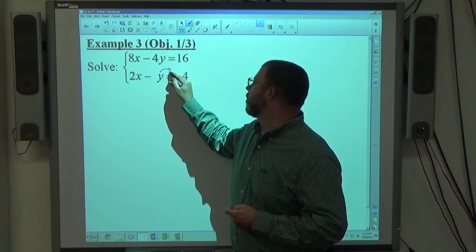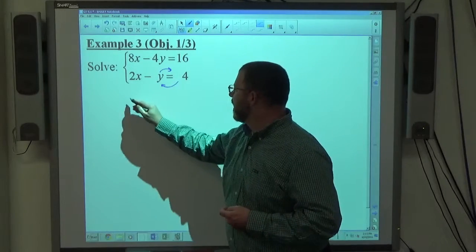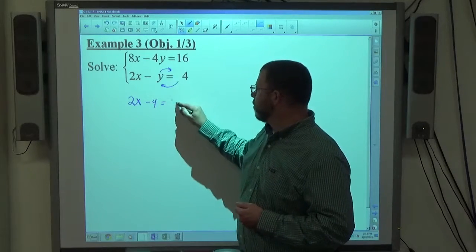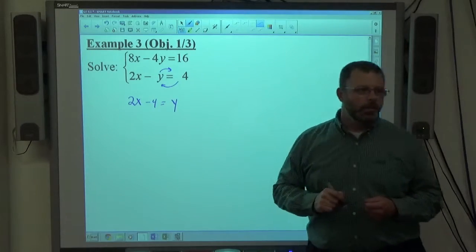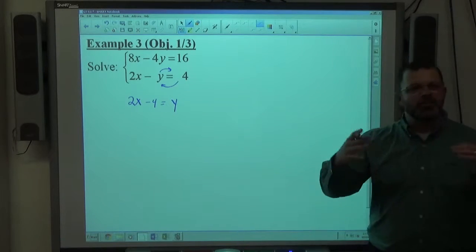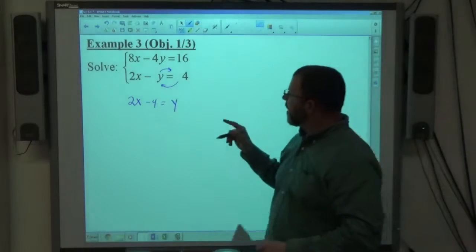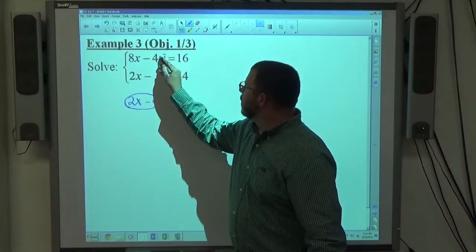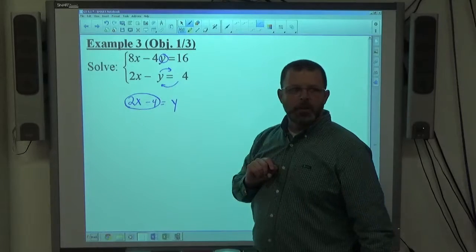I move the negative y over to the right and the 4 over to the left. That gets me 2x staying where it's at, 4 moves left becomes negative, negative y moves right becomes positive. I don't have to divide by anything, so y equals this nice non-fraction looking expression. And if I know that y equals this expression, 2x minus 4, I can put 2x minus 4 in place of the y in the top equation.